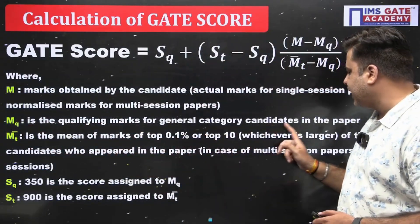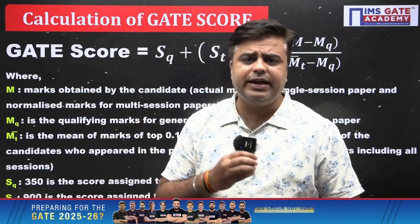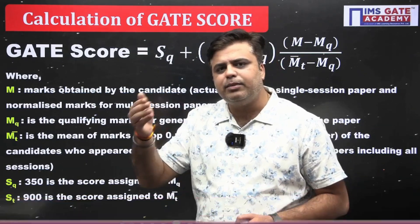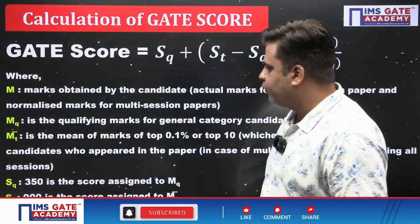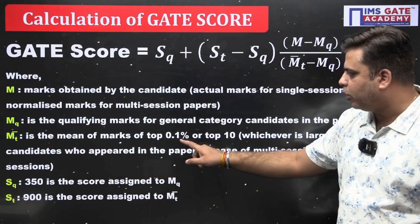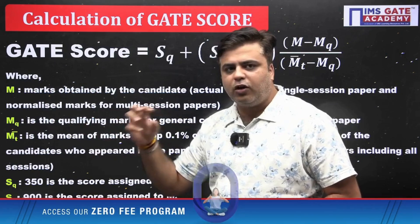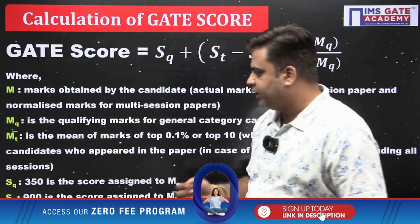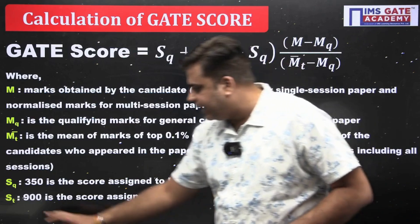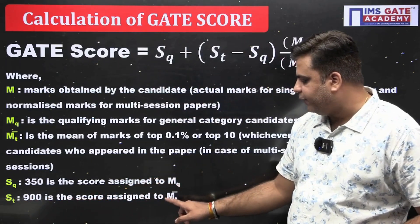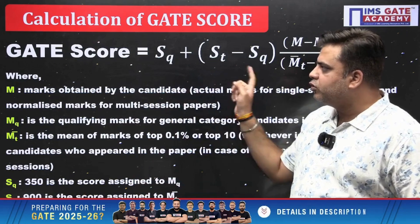Mq is the qualifying marks for general category candidates, which is a minimum of 25 marks. Mt̄ is the mean marks of the top 0.1% or top 10 students, whichever is larger. Sq is 350, which is the score assigned for the minimum qualifying marks, and St is 900, which is the GATE score assigned for the mean of the top 0.1% or top 10 students.